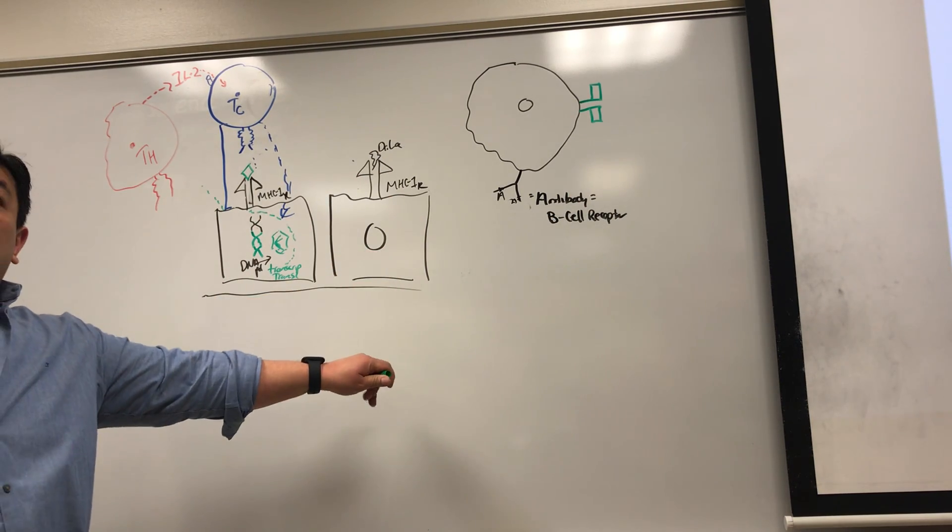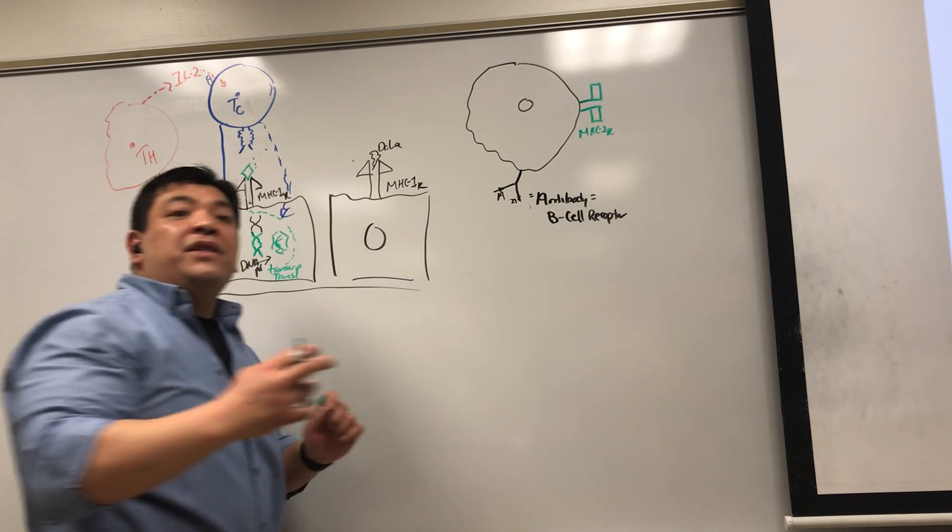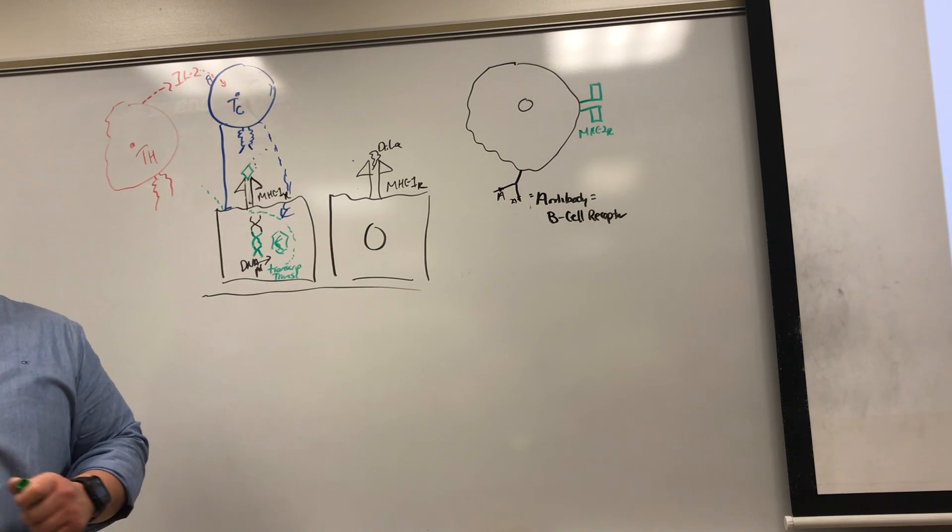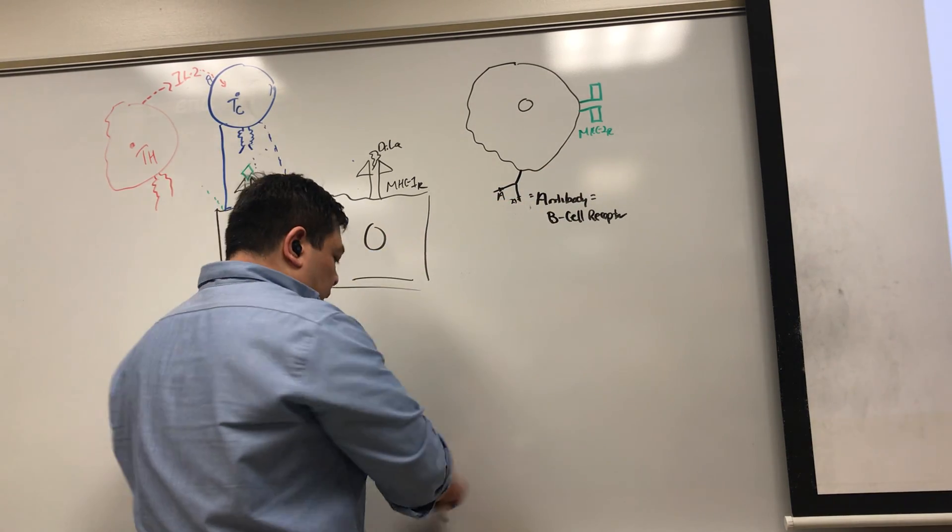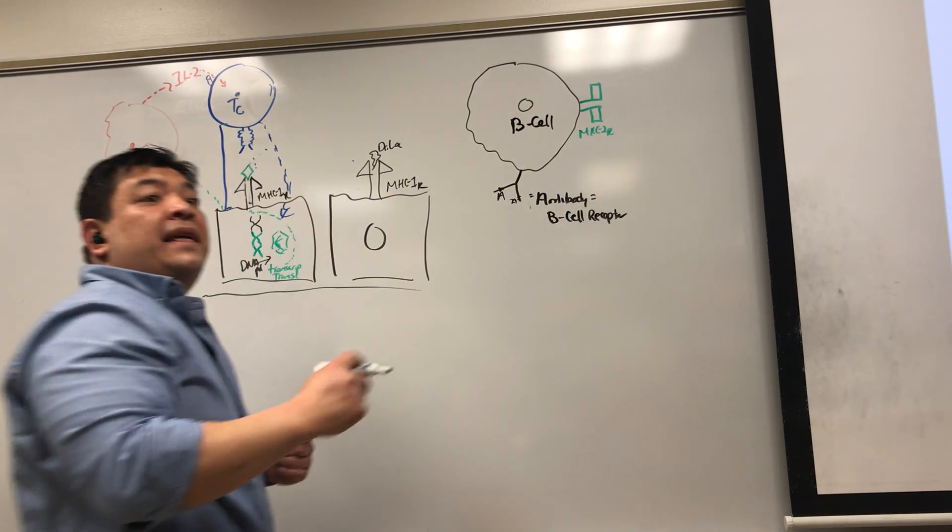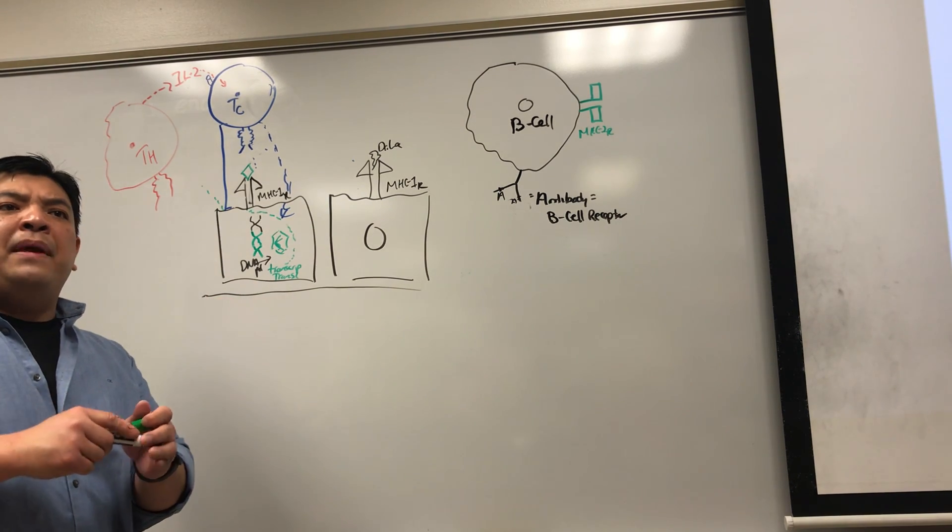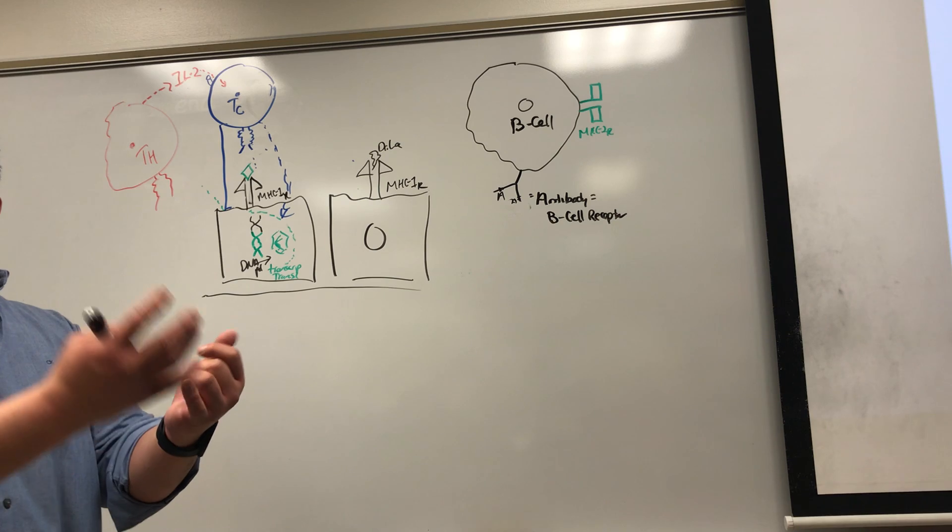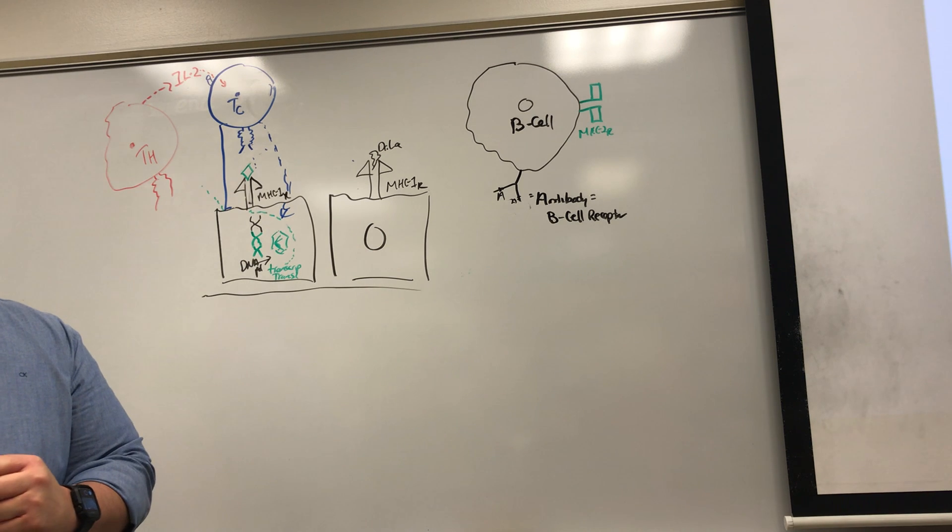The MHC2, remember, MHC2 displays epitopes that are foreign. That you picked up from a virus, killed the virus, and now you display the epitope. Now, what makes the MHC2 in a B-cell different than the MHC2 from the macrophage?